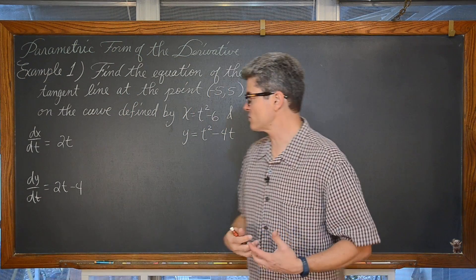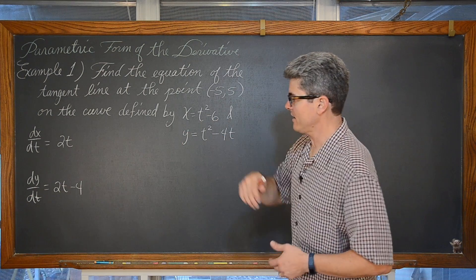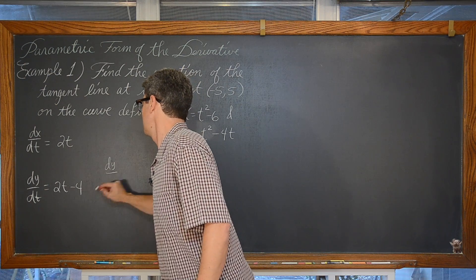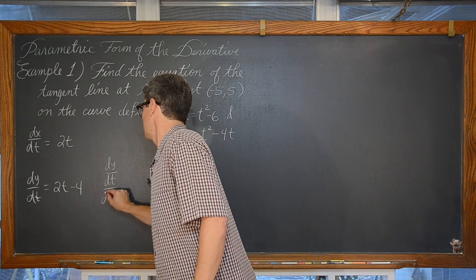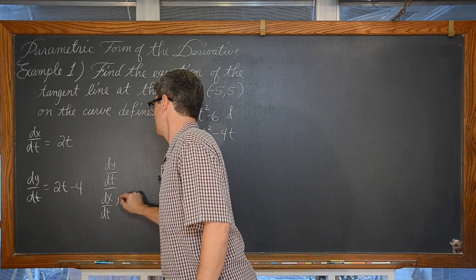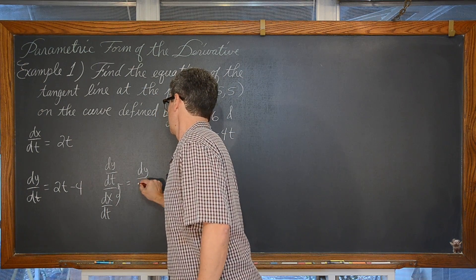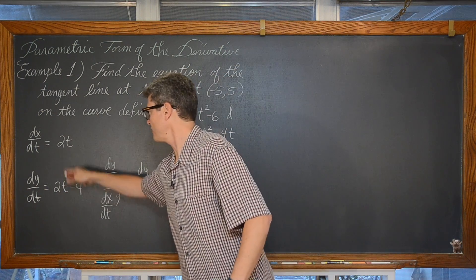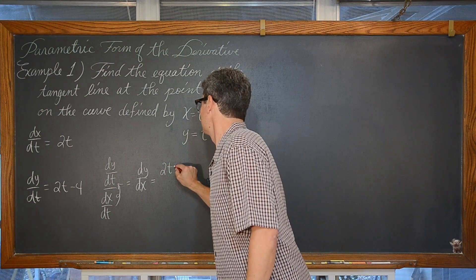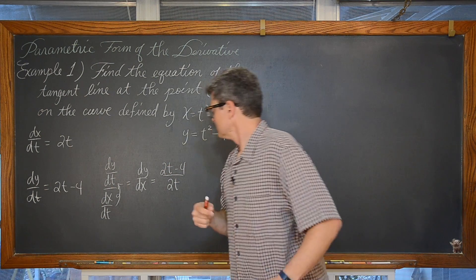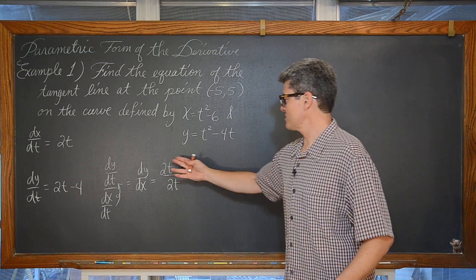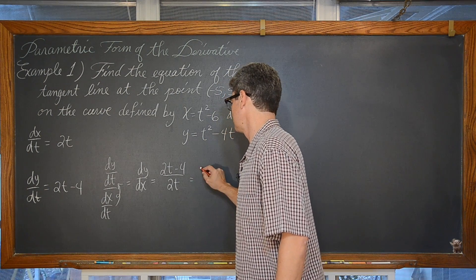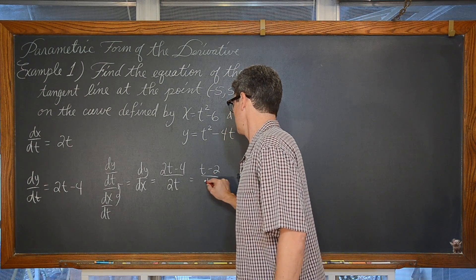Combining those two individual derivatives of x and y with respect to t and writing out dy/dt over dx/dt, giving us dy/dx, we have 2t minus 4 over 2t. Of course these are all even values so we can reduce that and say that we have t minus 2 over t.